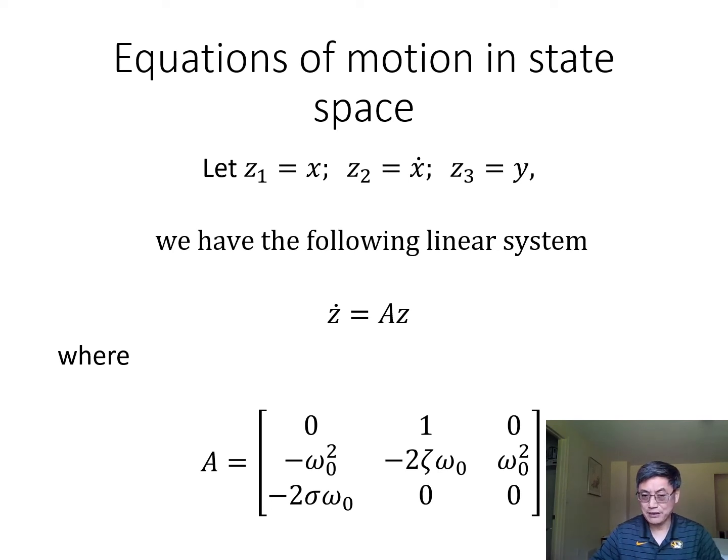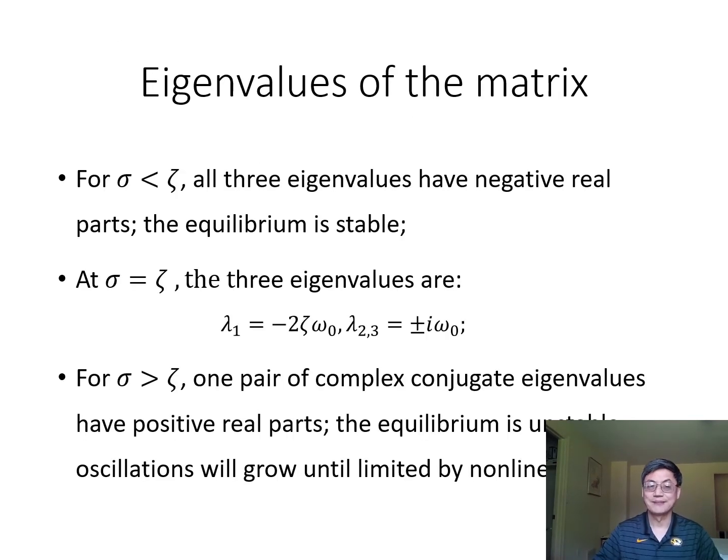From that, you can determine the roots of the characteristic equations. You can also see that if σ or the feedback gain is less than the damping ratio ζ, all eigenvalues have negative real parts, so the equilibrium is stable.